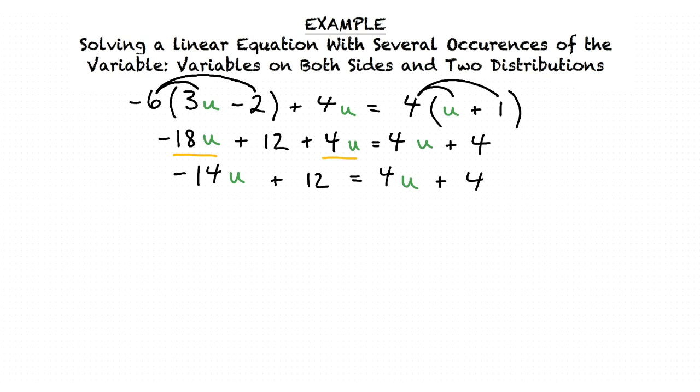Remember our goal is to isolate the variable u. This means we can move all of the values containing the variable u onto one side and all of the constants onto the other side. So let's move all of the values containing the variable u onto the left hand side of our equation and all the constants onto the right hand side of our equation.